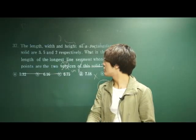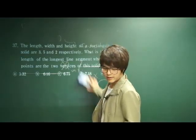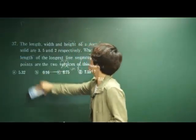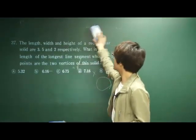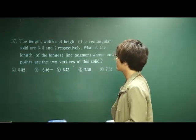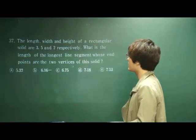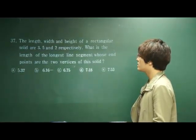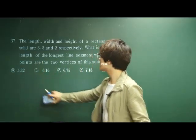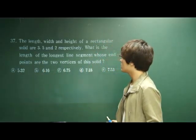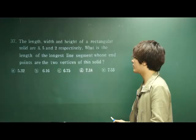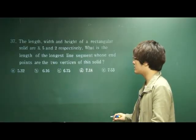Number 37: the length, width, and height of a rectangular solid are 3, 5, and 2 respectively. What is the length of the longest line segment whose endpoints are two vertices of this solid?